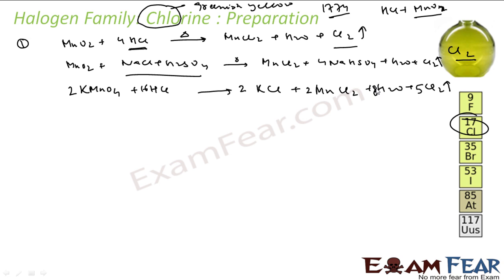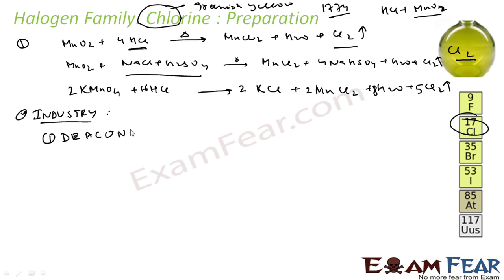Chlorine is a very important gas, and we prepare it on a large scale in industry. In industry, we can't use lab methods because they'd be costly — when you talk about industrial preparation, it has to be cheap. The first industrial method is the Deacon's process: we oxidize HCl gas by atmospheric oxygen in the presence of CuCl2 catalyst.